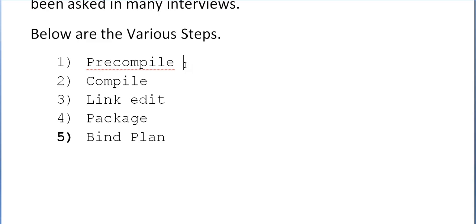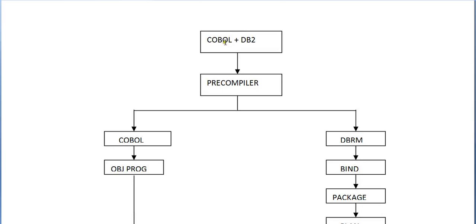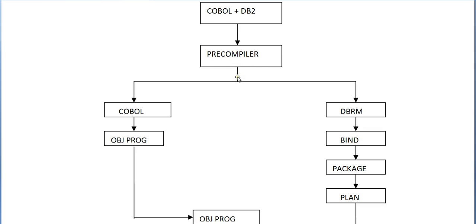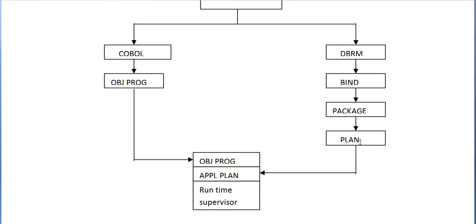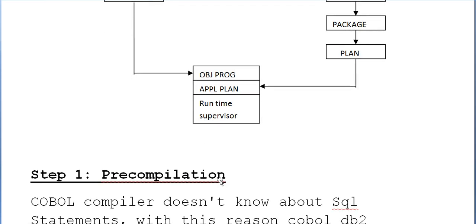I have drawn a chart for this. The COBOL plus DB2 program goes to the pre-compiler, which expands all copy books and replaces the DB2 statements with COBOL call statements. We get a modified source code containing only COBOL statements, and a DBRM is created. The DBRM then goes to bind, then to package, then to plan. These plans and the object module combine together to complete the COBOL DB2 compilation.